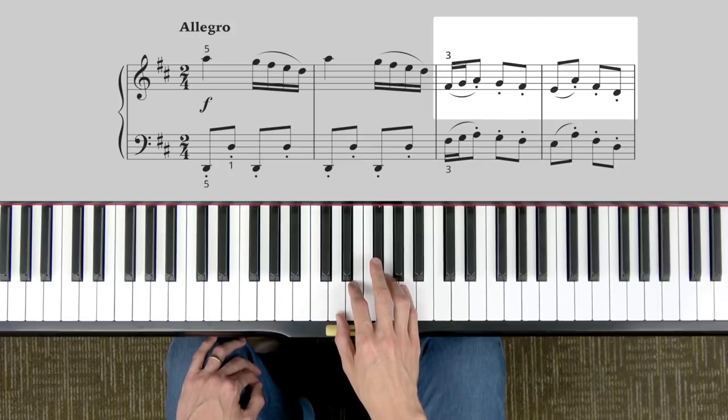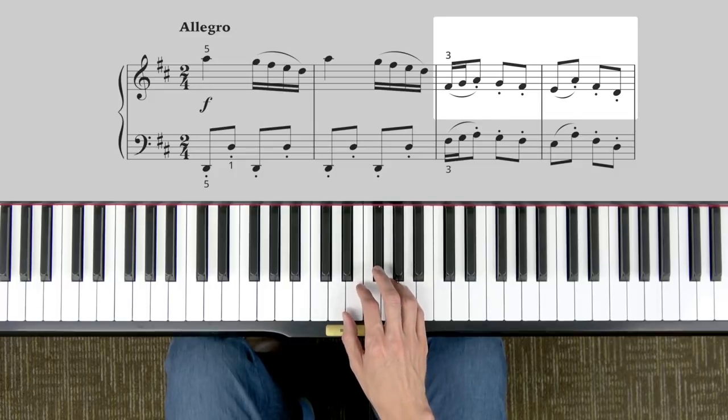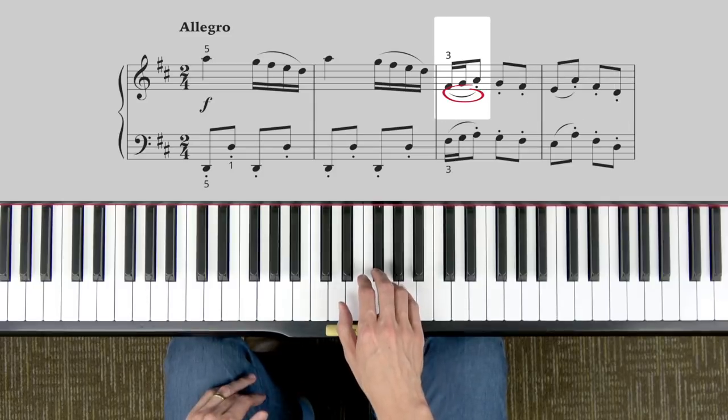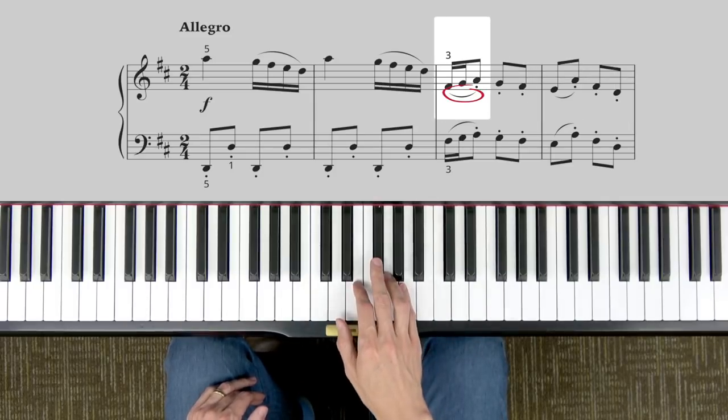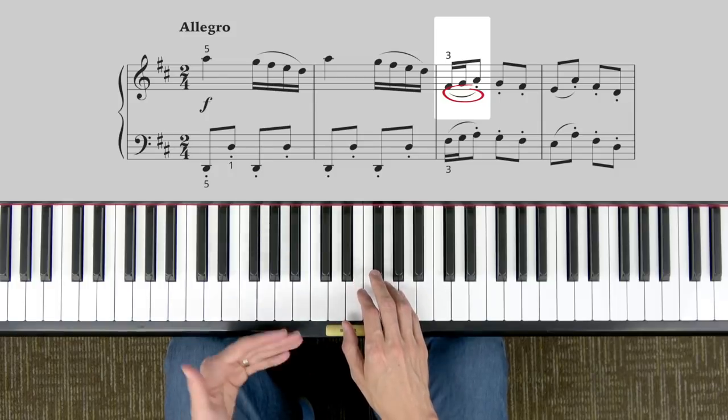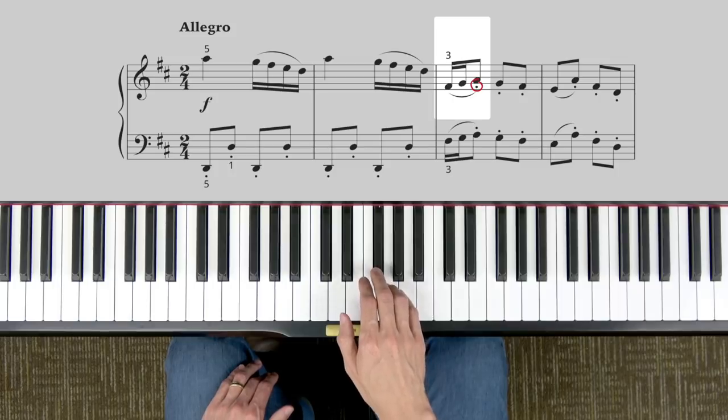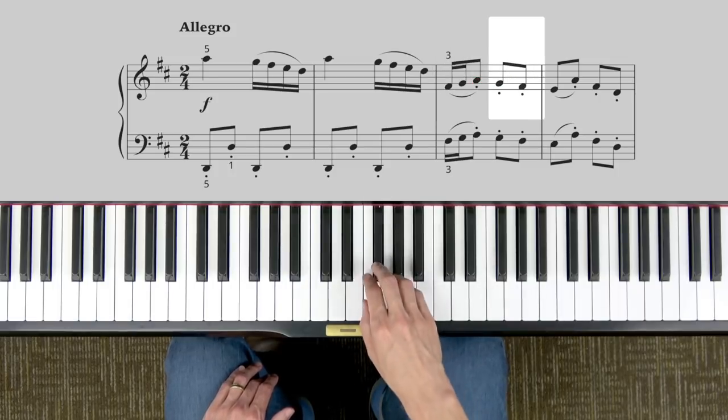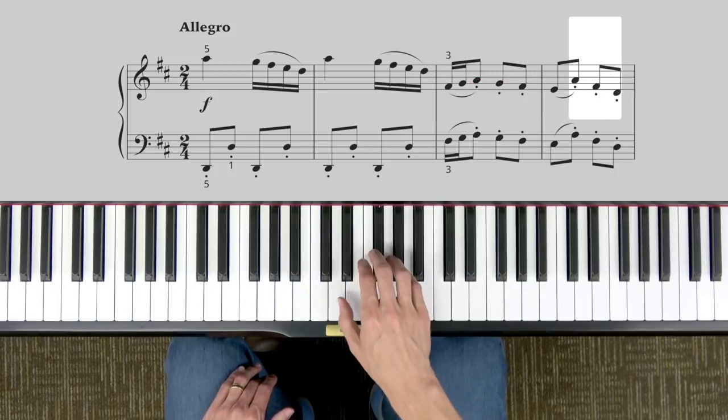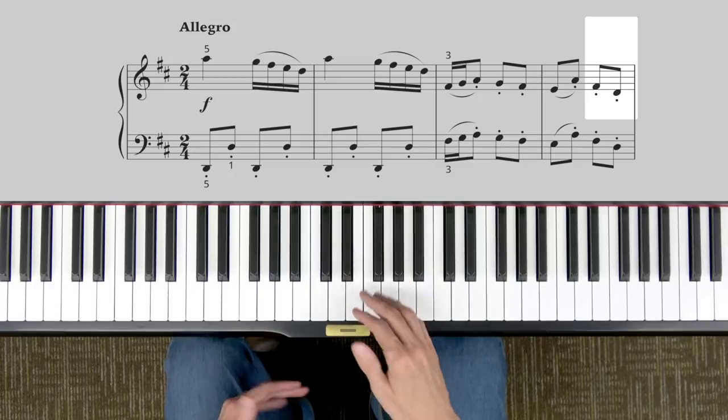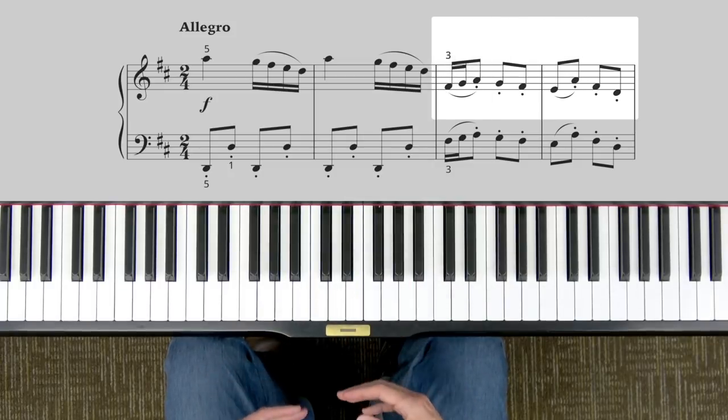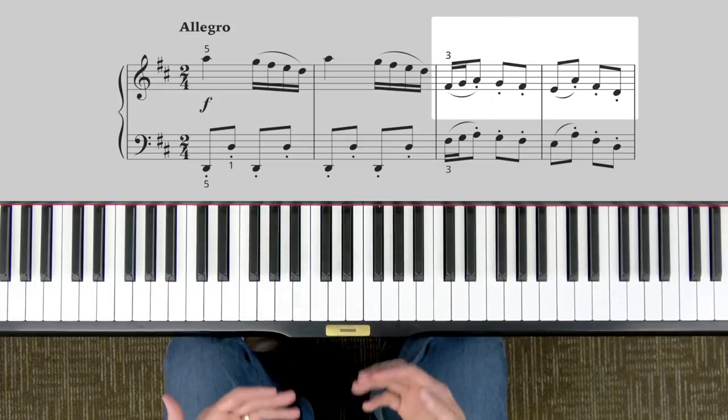Now in measures three and four I'd like you to pause the video and work on this section, but please note and try to learn from the beginning where you see slurs the slurs, which will connect the notes in a legato style. Notice that slur ends with the staccato. Staccato, staccato, slur, staccato, staccato, staccato. Try to train that from the beginning so you don't have to add that later on.